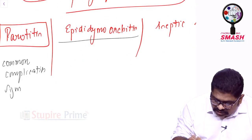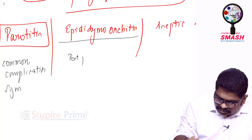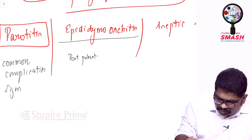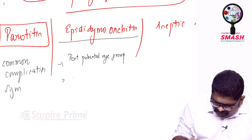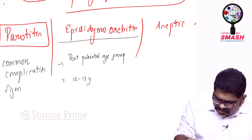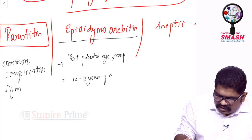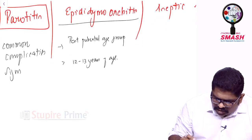Epididymo-orchitis happens in the post-pubertal age group. So if mumps attacks people who are more than 12 to 13 years of age, they can easily acquire mumps orchitis.